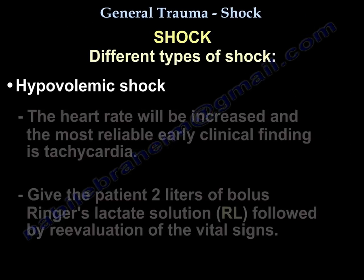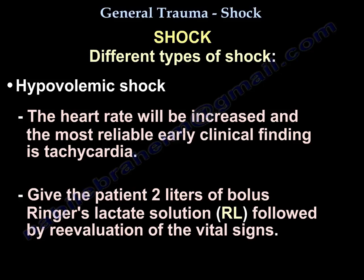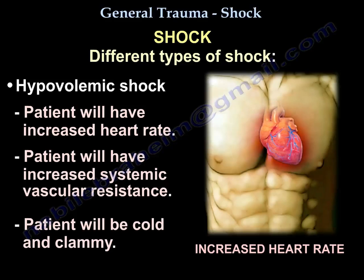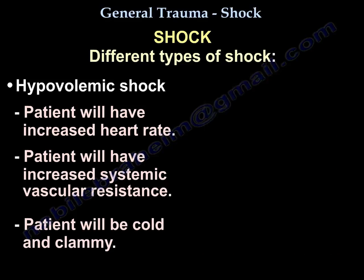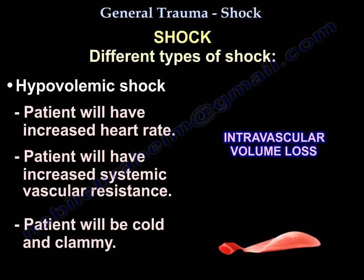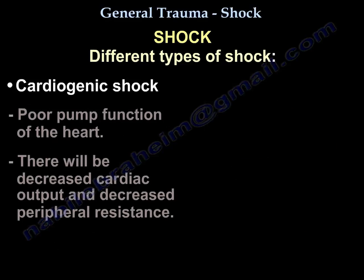The heart rate will increase. The most reliable early clinical finding for hemorrhagic shock is tachycardia. You're going to give the patient two liters bolus of Ringer's lactate followed by re-evaluation of vital signs. The patient will have increased heart rate, increased systemic vascular resistance, and will be cold and clammy.